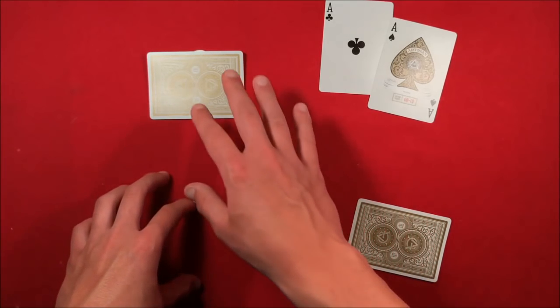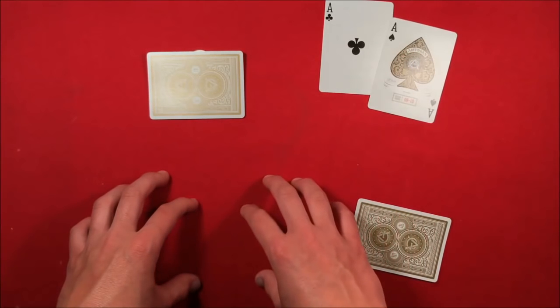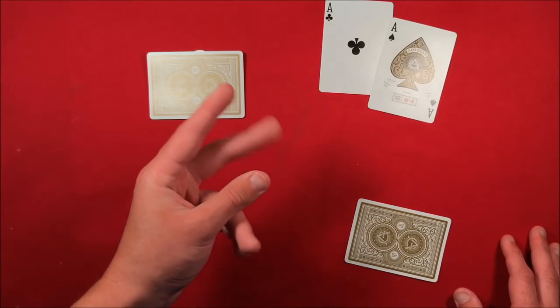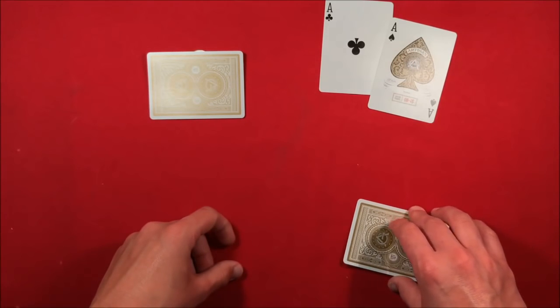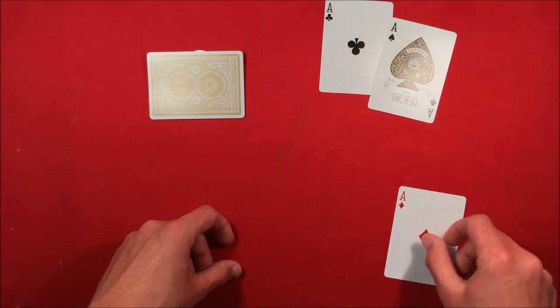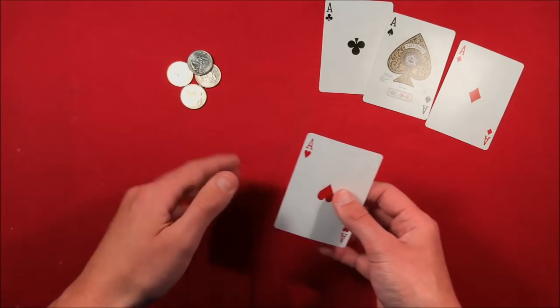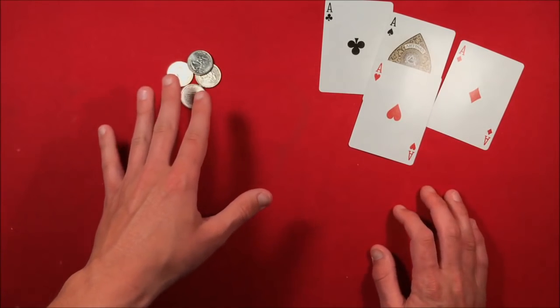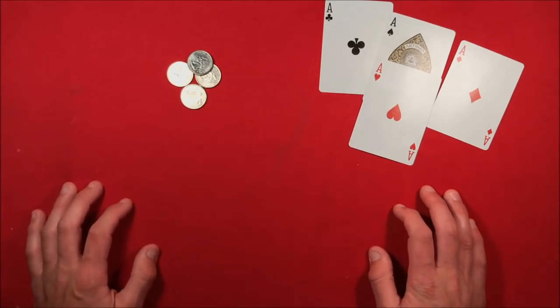And like I said, it won't make too much of a difference if there's clanking just because there's already other quarters there. And then from here you can snap and do whatever you want - show them that there's no quarter underneath this final ace, and then pick up the last one and all the quarters have moved over here.